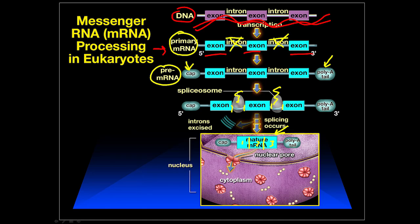They may have other functions, as mentioned. All of this processing — the capping, the tailing, the splicing — occurs inside of the nucleus. Only once the messenger RNA is completely processed can it get out through one of the nuclear pore complexes and make its way to find a ribosome to get translated.